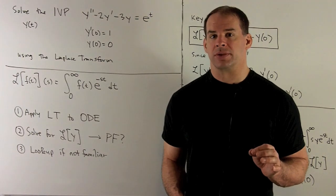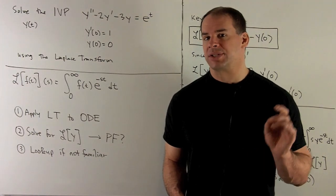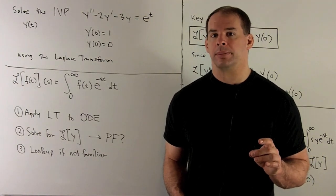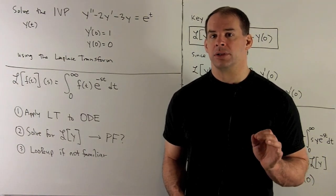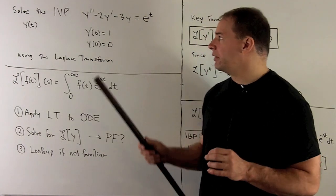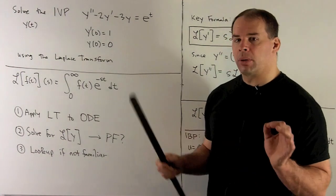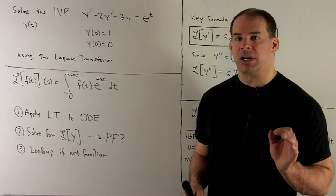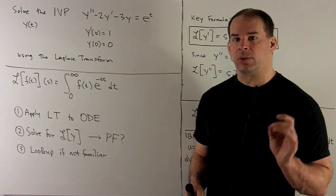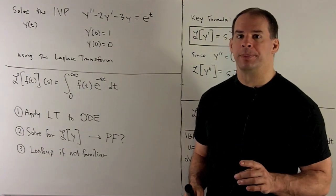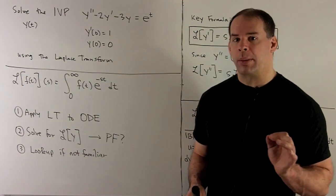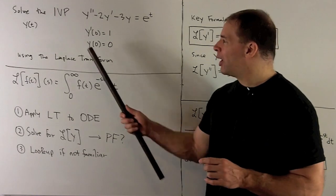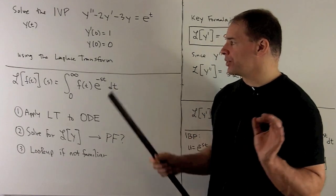Using the Laplace transform, solve the following initial value problem. We'll have y double prime minus 2y prime minus 3y equals e to the t, with initial conditions y prime of 0 equals 1 and y of 0 equals 0.